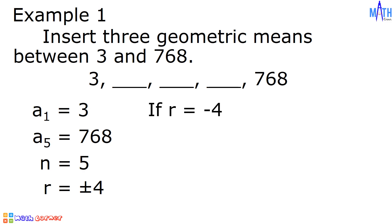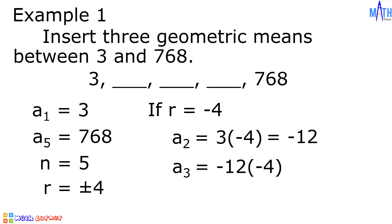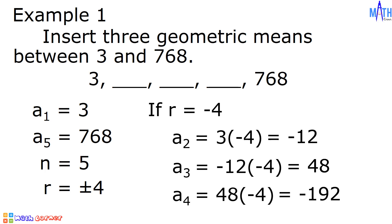If r is equal to negative 4: a sub 2 is equal to 3 times negative 4, which is equal to negative 12. a sub 3 is equal to negative 12 times negative 4, which is equal to positive 48. a sub 4 is equal to 48 times negative 4, which is equal to negative 192. If r is equal to negative 4, the three geometric means between 3 and 768 are negative 12, 48, and negative 192.